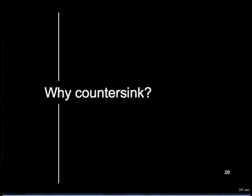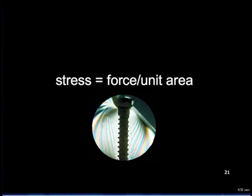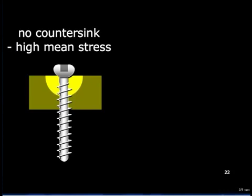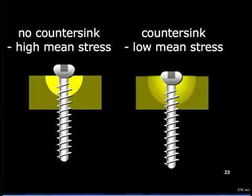Why should we countersink the cortex beneath a cortical screw head — the cis cortex? Stress is the force applied divided by the area over which it is applied. The smaller the area, the greater the stress on the bone. If we fail to countersink, the area of compression is small and the stress high, risking failure of the bone. If we countersink, the area is increased and the stress reduced. With cancellous screws, used largely in metaphyseal and epiphyseal sites, the underlying cortex is too thin to countersink. If we try to countersink, the head compresses the cancellous bone beneath and it may fail, being much less resistant to high stress. Instead, a washer is used, which increases the area over which the screw head compression is borne, thereby reducing the stress.